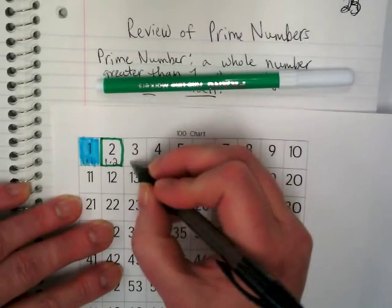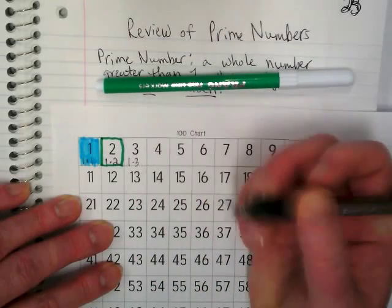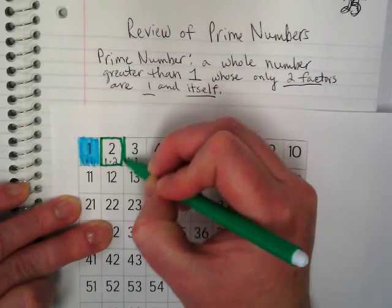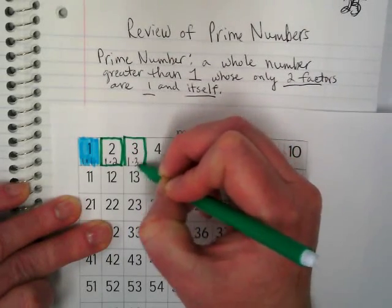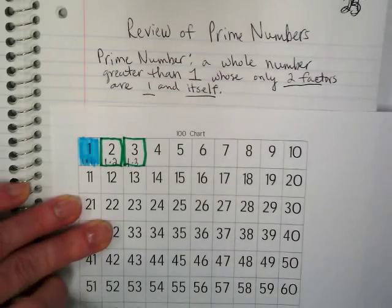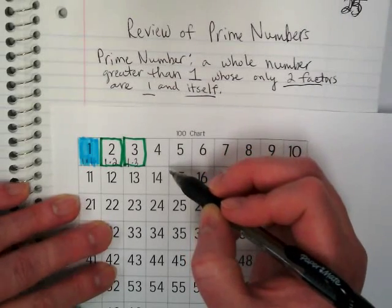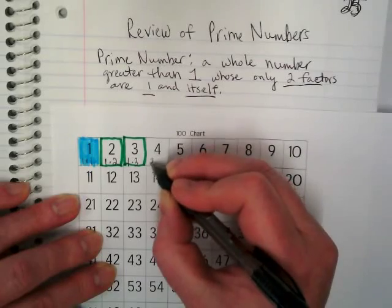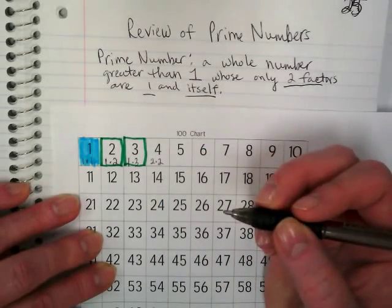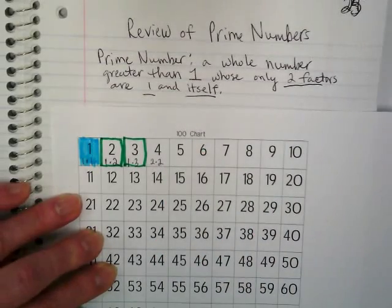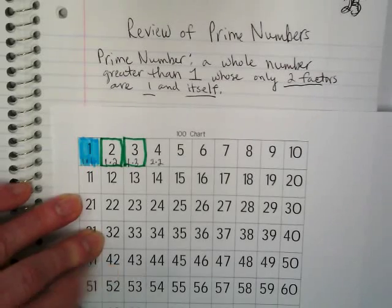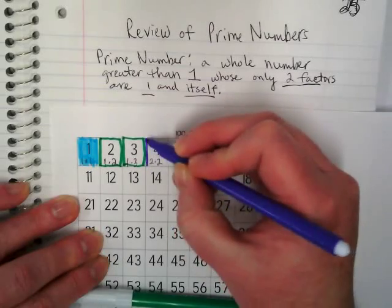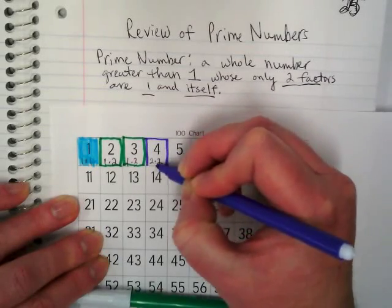What about one times three? Any other way to find three? Nope — three is also a prime number. What about four? Well, we know we can do one times four, but we can also do two times two to get four. So that means it's not prime — it's what we call a composite number, where it can be made more than one way.